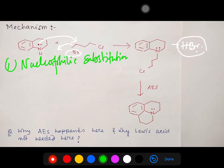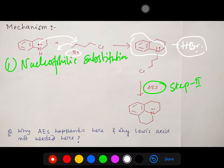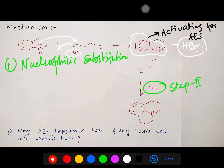Step one is a nucleophilic substitution reaction. In step two, aromatic electrophilic substitution occurs. You have to look very carefully at two interesting phenomena here. After the reaction, this nitrogen is still electron-rich and is an activating group towards aromatic electrophilic substitution, because the lone pair of nitrogen is involved in resonance and it increases the electron density at the ortho and para positions.